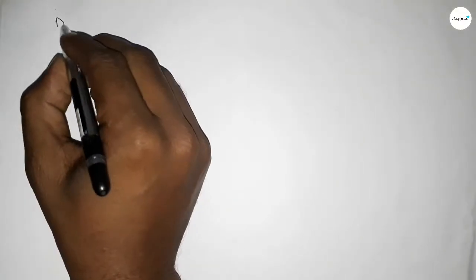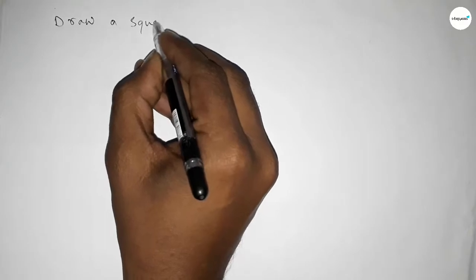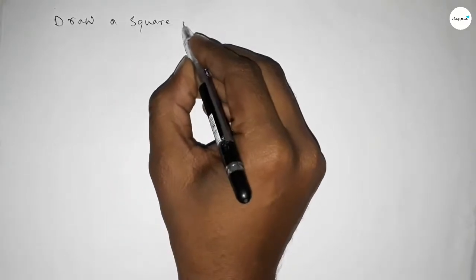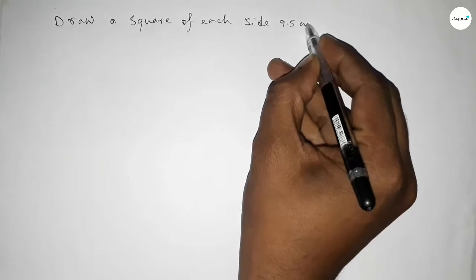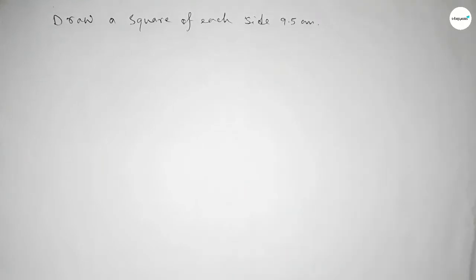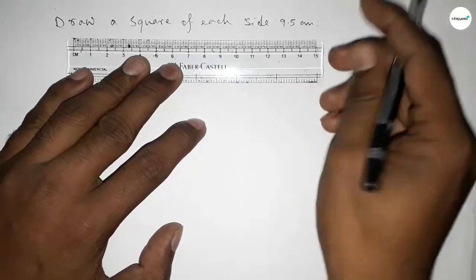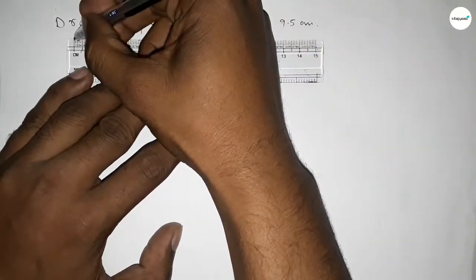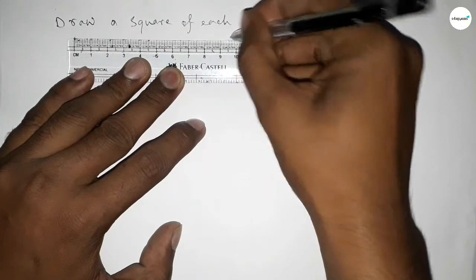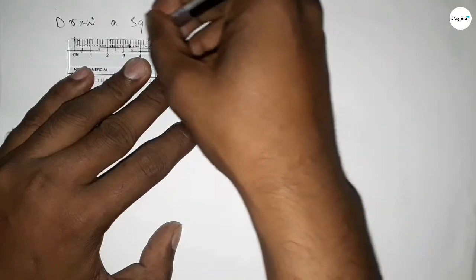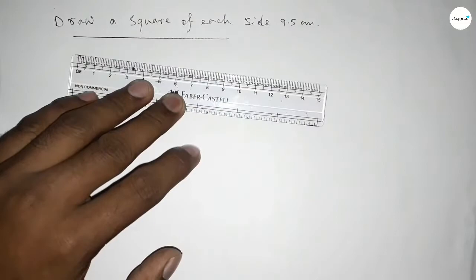Hi everyone, welcome to Essay Share Classes. Today in this video we have to draw a square of each side length 9.5 centimeters. So let's start the video. First, drawing here the given length 9.5 centimeters.